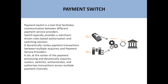Let me give an example. Payment switch — we all know that in any banking industry or financial institutions, they have a core banking system, or CBS, which basically has all the information about customer accounts, including where they have to do the debit and where they have to do the credit.